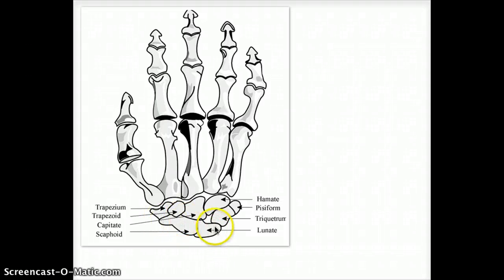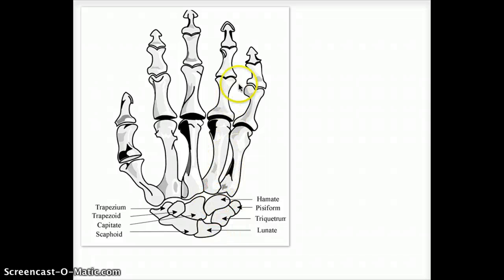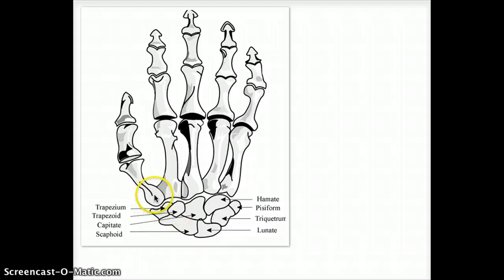After scaphoid and lunate, there is triquetrum, pisiform, hamate — hamate is the closest to the fifth digit — followed by capitate, trapezoid, and trapezium. Scaphoid, followed by lunate, followed by triquetrum, pisiform, hamate, capitate, trapezoid, and trapezium.